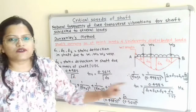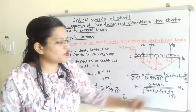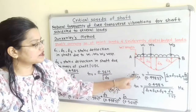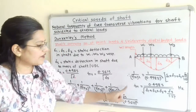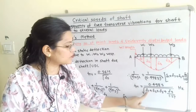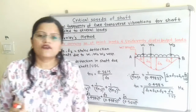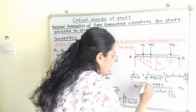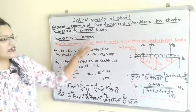Taking the square root on both sides and inverting to find Fn, the final formula by Dunkerley's method is: Fn = 0.4985 / √(δ1 + δ2 + δ3 + δS/1.27) hertz.